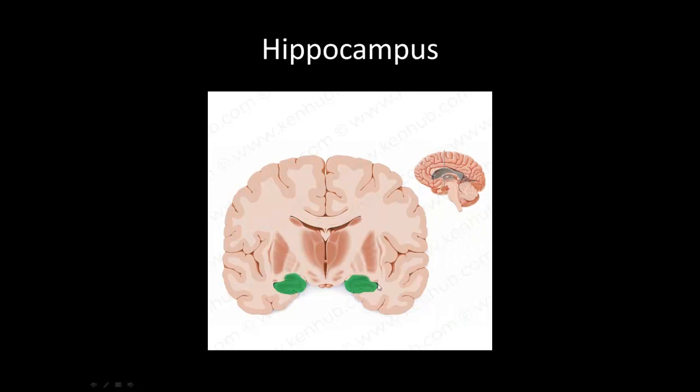We have the putamen here — another one of the basal nuclei involved with the motor system. And last, we have the hippocampus, which is involved in memory formation.